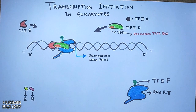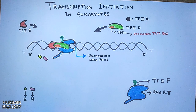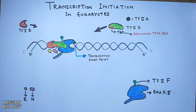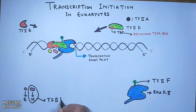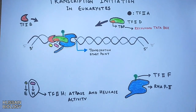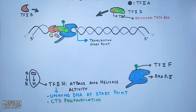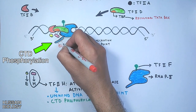Finally, we have two more factors — TF2E and TF2H. First, TF2E joins the complex, and then TF2E recruits TF2H. TF2H is an important transcription factor since it has ATPase activity as well as helicase activity. It unwinds the DNA at the start point and also phosphorylates the CTD of RNA polymerase 2.